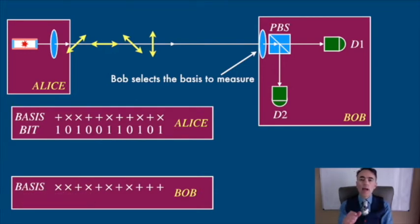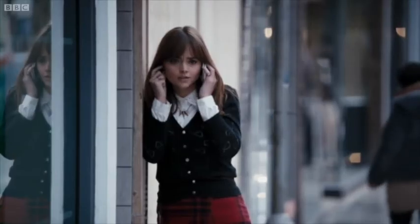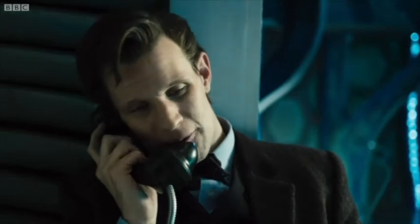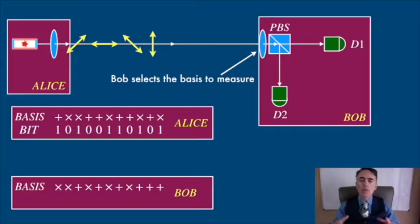Well, Alice and Bob share publicly the basis. They call each other and tell which basis they chose. They do this for a portion of the whole key, just to test the channel. This portion they will discard later.